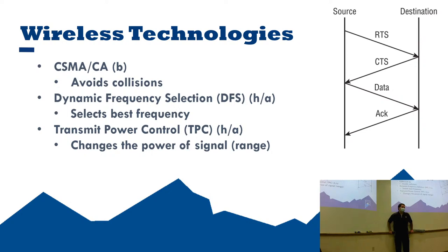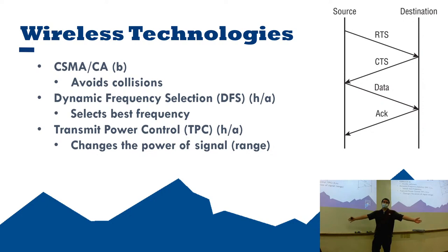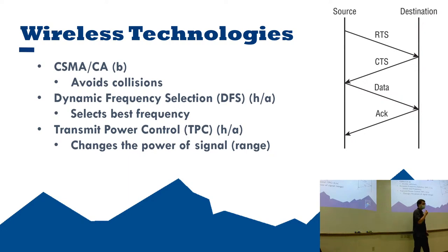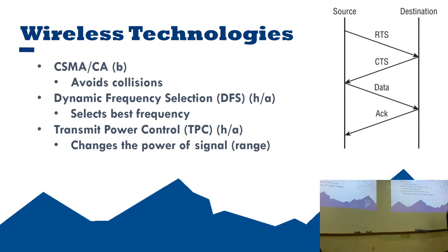Now I'll go through wireless technologies introduced by each standard — if a technology was introduced in one standard, it's present in all subsequent standards. First is collision avoidance (CSMA/CA), introduced in 802.11b. The process is: request to send, confirm to send, send the data, then send the acknowledgement. This has overhead, but without it, 802.11 transmissions would not be a usable experience.